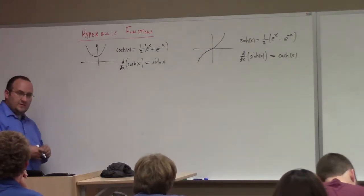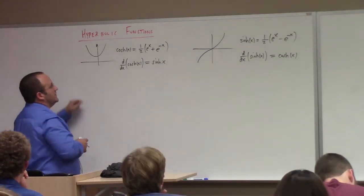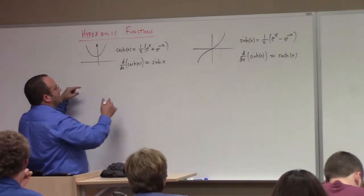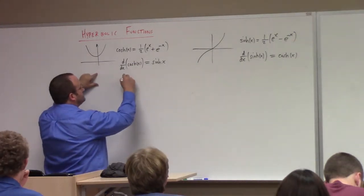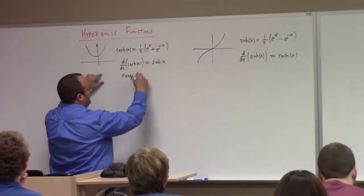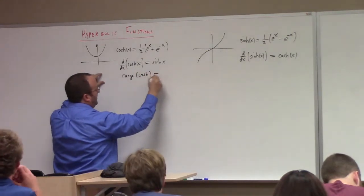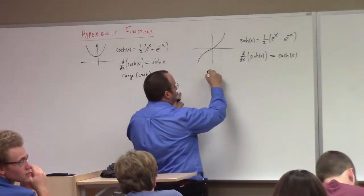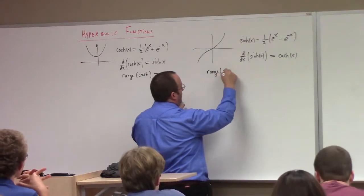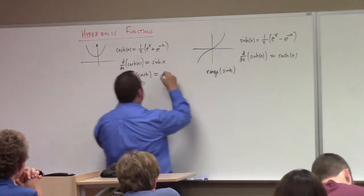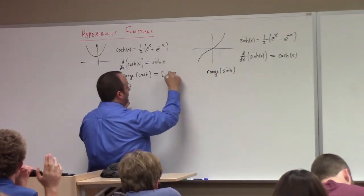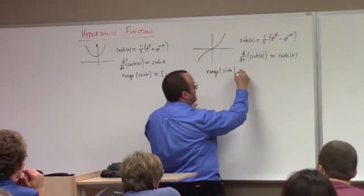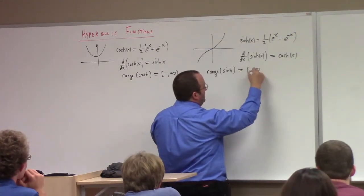What's the range of cosh? What's the range of sinh? The range of cosh is one to infinity, right? One included. How about sinh? The whole real line.